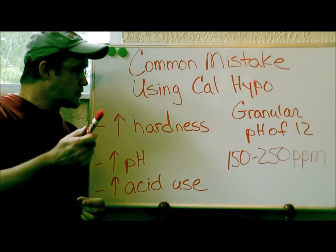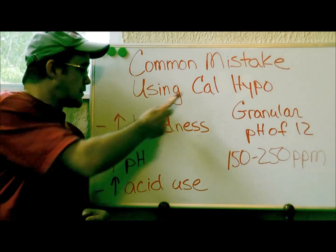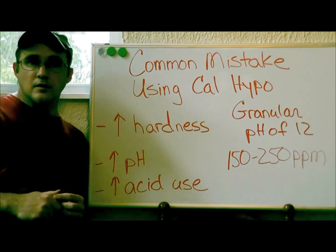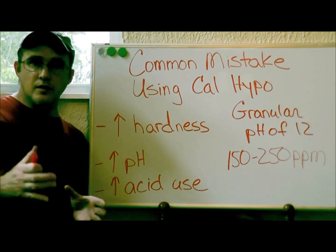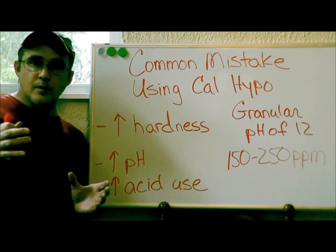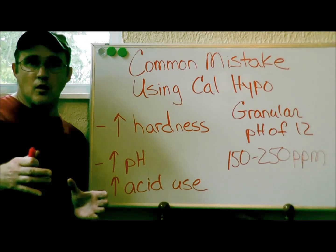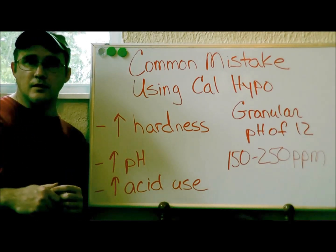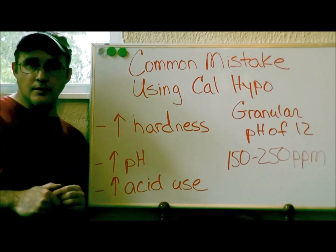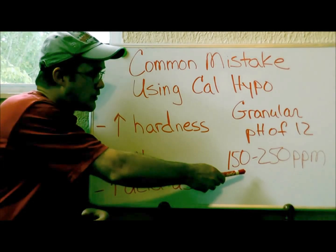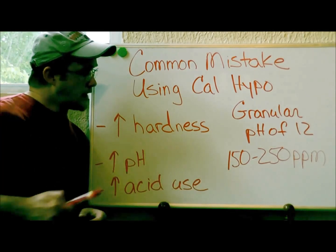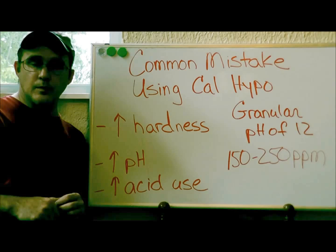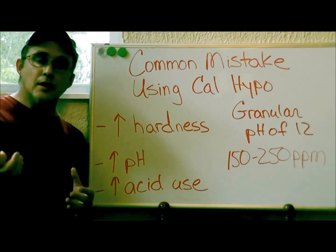First off, as the name implies, it contains calcium — so you're going to add or increase the water hardness. Now if you live in a place that already has high hard fill water, you don't want to use calcium hypochlorite. You want to keep your calcium hardness level between 150 to 250 parts per million.